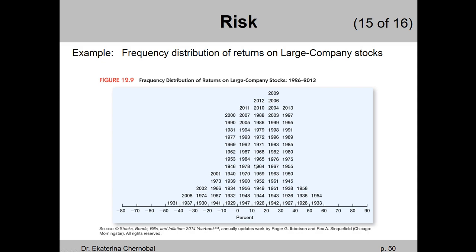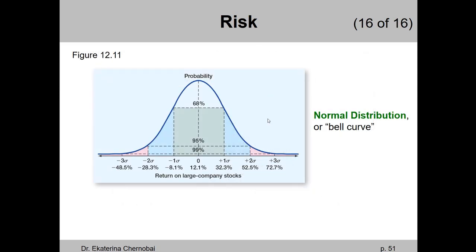Now let's simplify it. The frequency distribution looks like what we call the bell curve — it smoothly goes up and then goes down. That's what the normal distribution looks like. There's a peak somewhere in the middle, and what's below and above the peak is less common, with lower frequency. It is symmetric on both sides — that's the normal distribution.